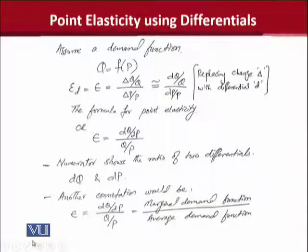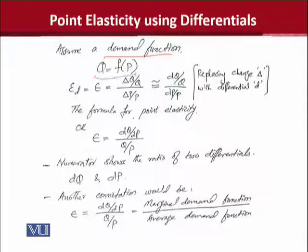Here we can understand this with the help of an example, which shows us the demand function in its functional form. Once we have the functional form, we can understand the relationship between the independent and dependent variables. Now this is the formula that guides us about the elasticity of demand. You can see delta Q over Q divided by delta P over P.